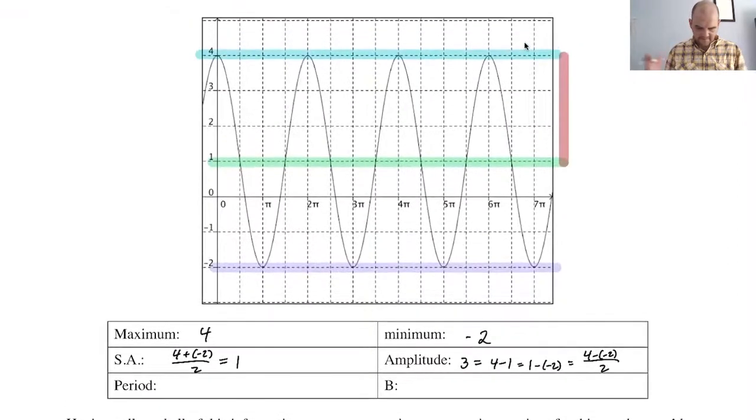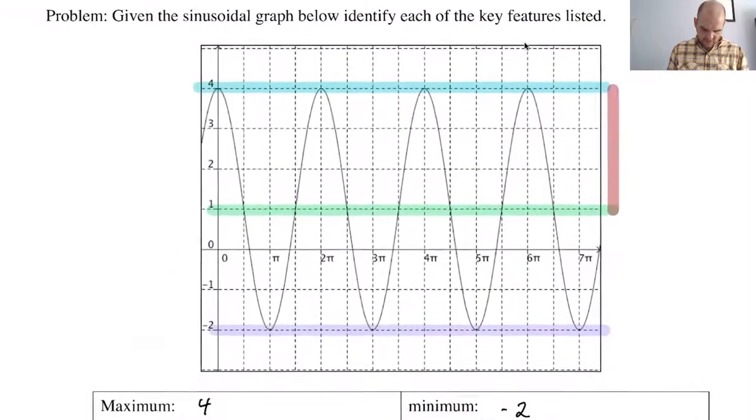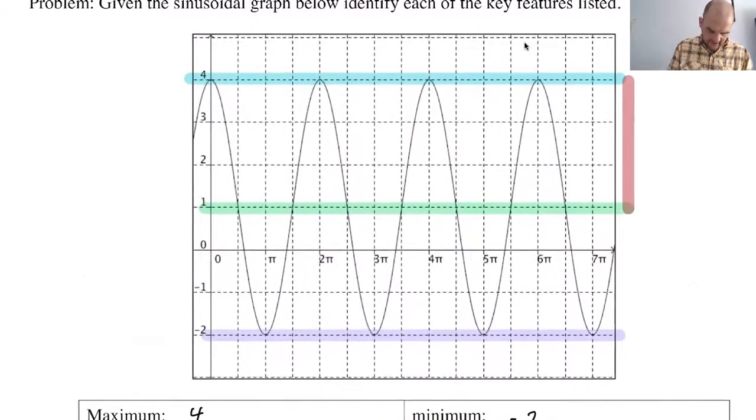The period. So you have to decide how you're going to find the period. I like to, whenever possible, which it almost always is, but not actually always is. I like to go from, I'm looking for a good color here. I like to go from a maximum to a maximum if I can. So I would do that and say that the period is two pi.